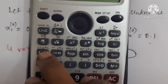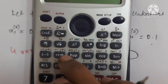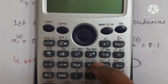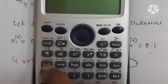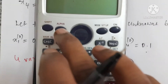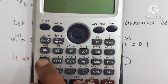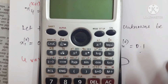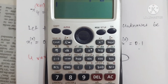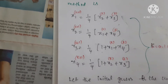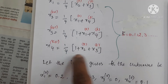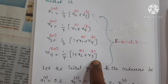We can see the letters in this row on the calculator. All these variables are in pink color. So if we want to get variable a, we have to use alpha and then the corresponding button. Let me show you how to enter the equations.